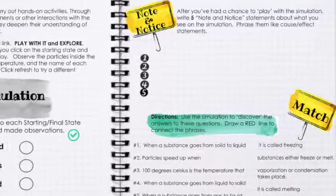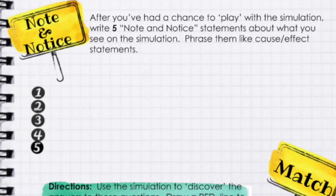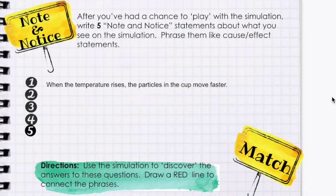If you're using this notebook page, you'll want to write five note and notice statements about what you see on the simulation. Note and notice statements are a lot like cause and effect statements. They might sound like this: When the temperature rises, I see particles moving faster.